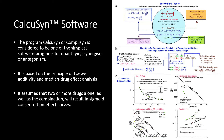The program CalcuSyn or CompuSyn is considered to be one of the simplest software programs for quantifying synergism or antagonism. It is based on the principle of low additivity and median drug effect analysis derived from mass-action enzyme kinetic models, previously established for enzyme-substrate interactions and then extended to multiple drug combinations. It assumes that two or more drugs alone, as well as the combination, will result in sigmoid concentration-effect curves.